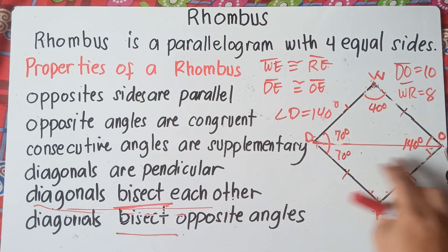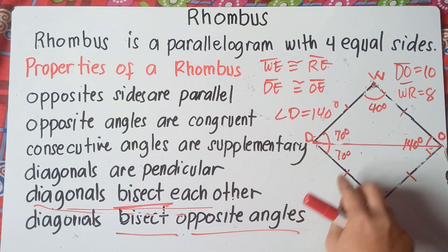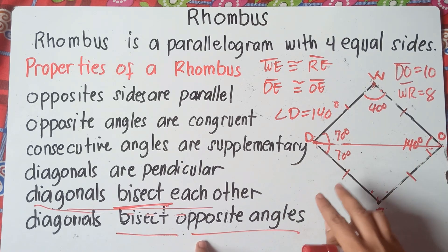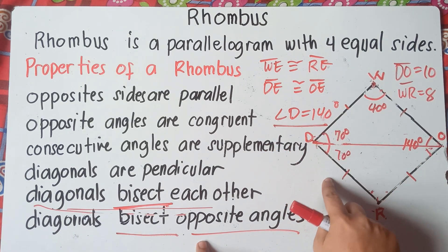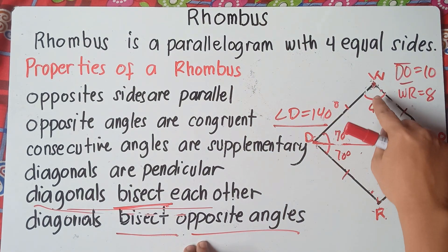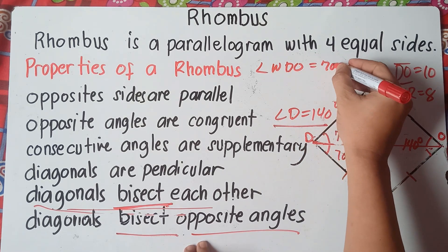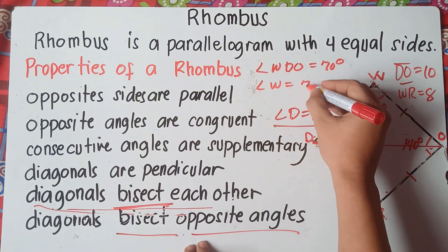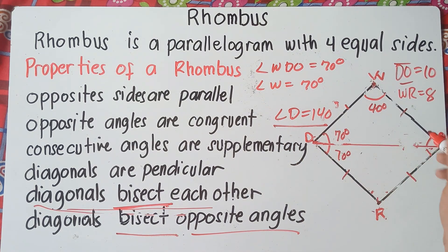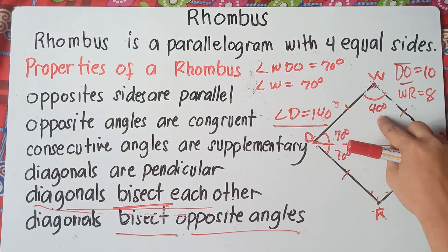The diagonal of the rhombus bisects the opposite angles, meaning they cut the angles into half. If angle D is 140 degrees, then angle WDO is 70 degrees and angle WOD is also 70 degrees. Similarly, if we draw another diagonal from W to R, and angle W is 40 degrees, we cut it into half.